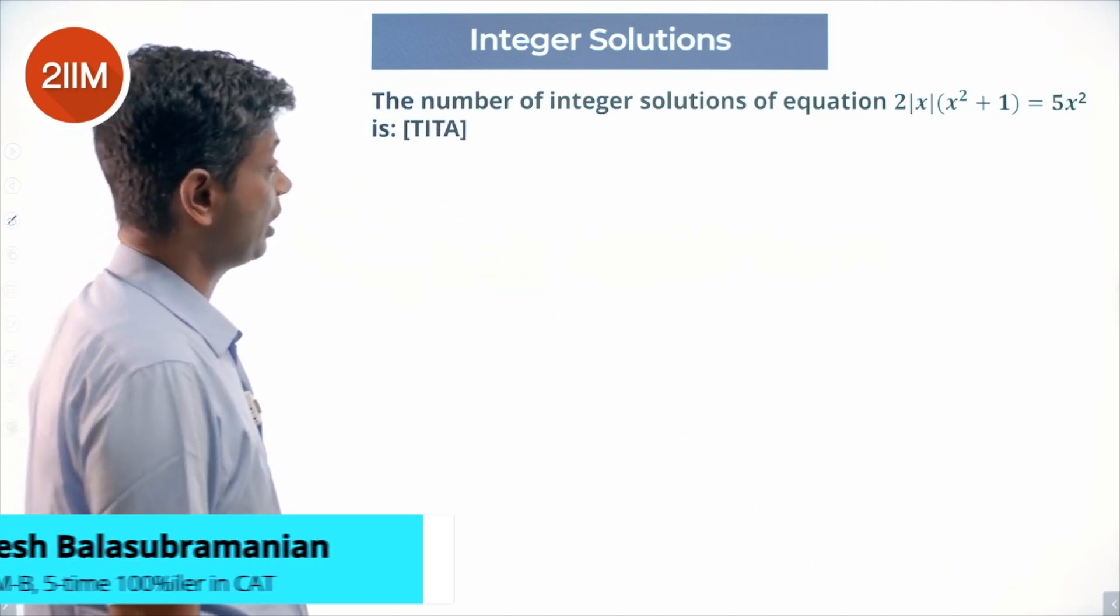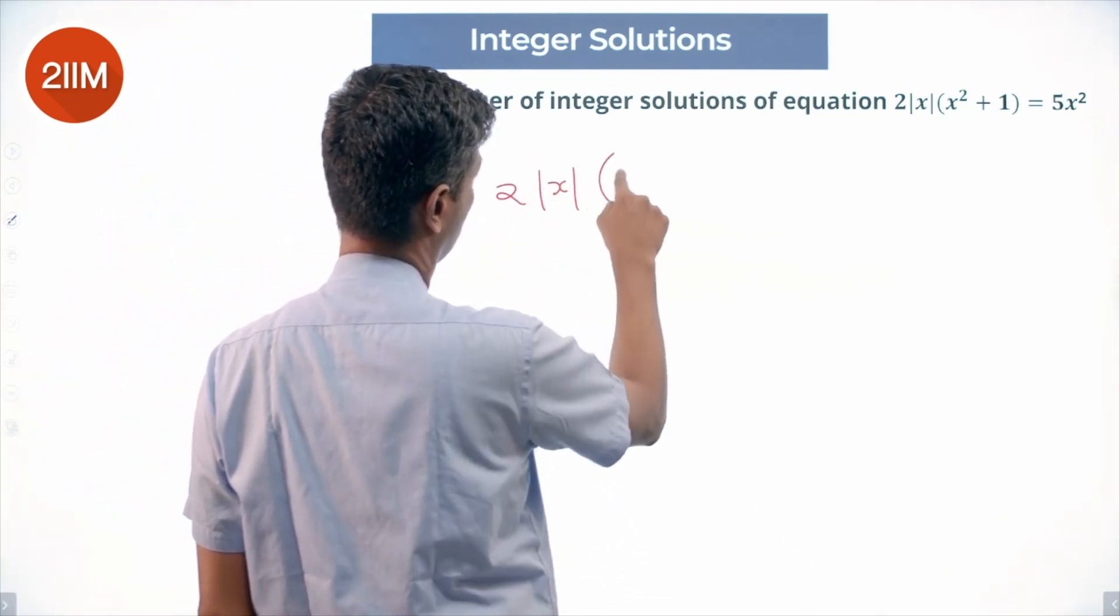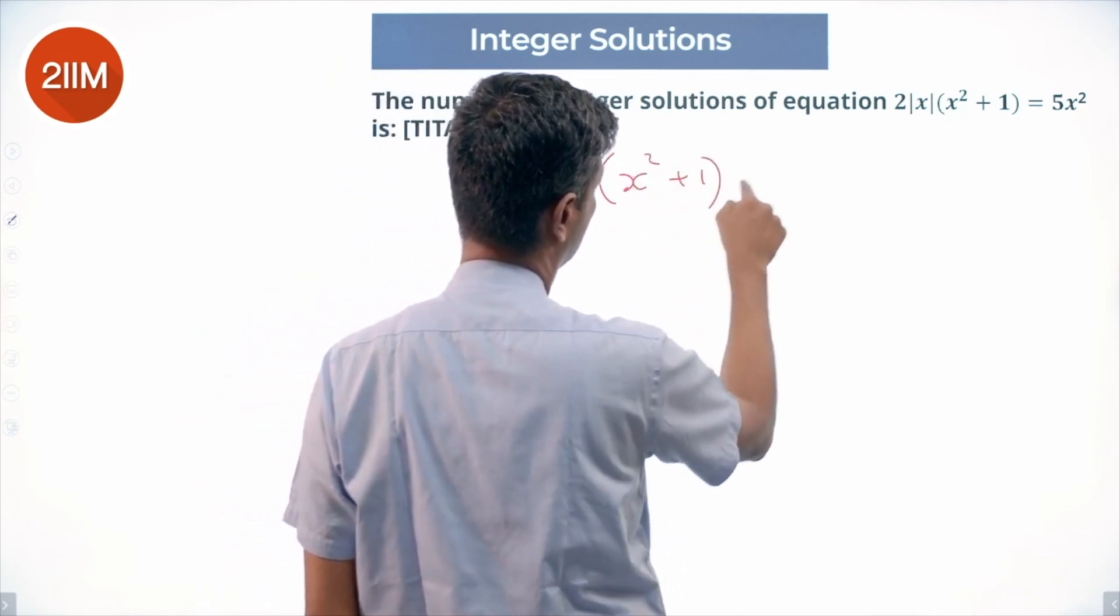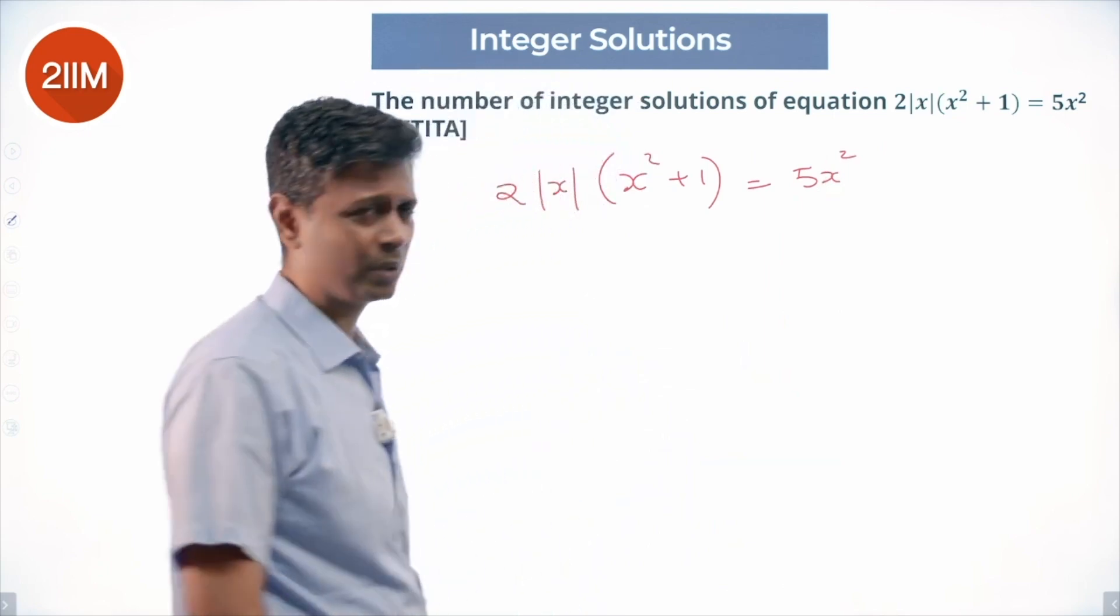The number of integer solutions to the equation 2|x|(x² + 1) = 5x². Nice question.